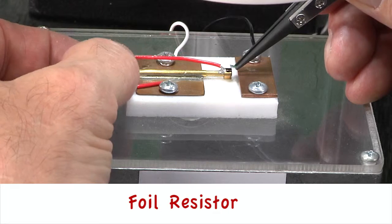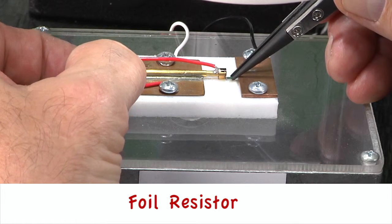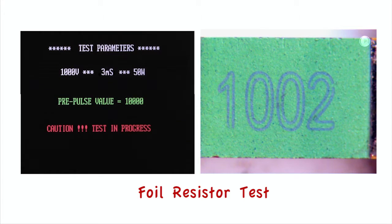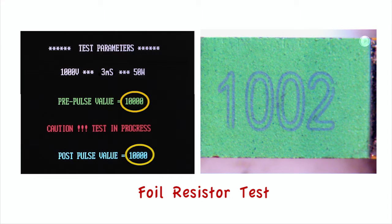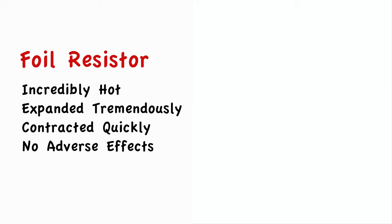And finally, the foil resistor. What just happened? Nothing. Absolutely nothing. The foil resistor absorbed the pulse with no damage or change in value. No doubt it got incredibly hot, expanded tremendously, then contracted very quickly with no effect. Imagine how stable this resistor will remain after years and years of normal use.